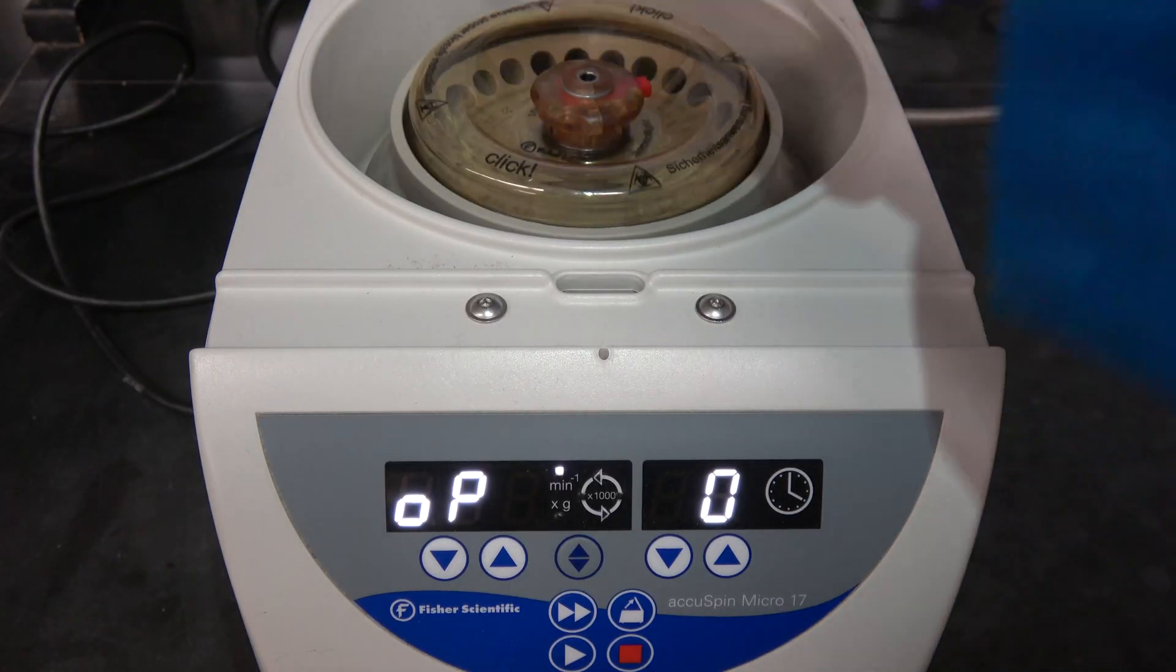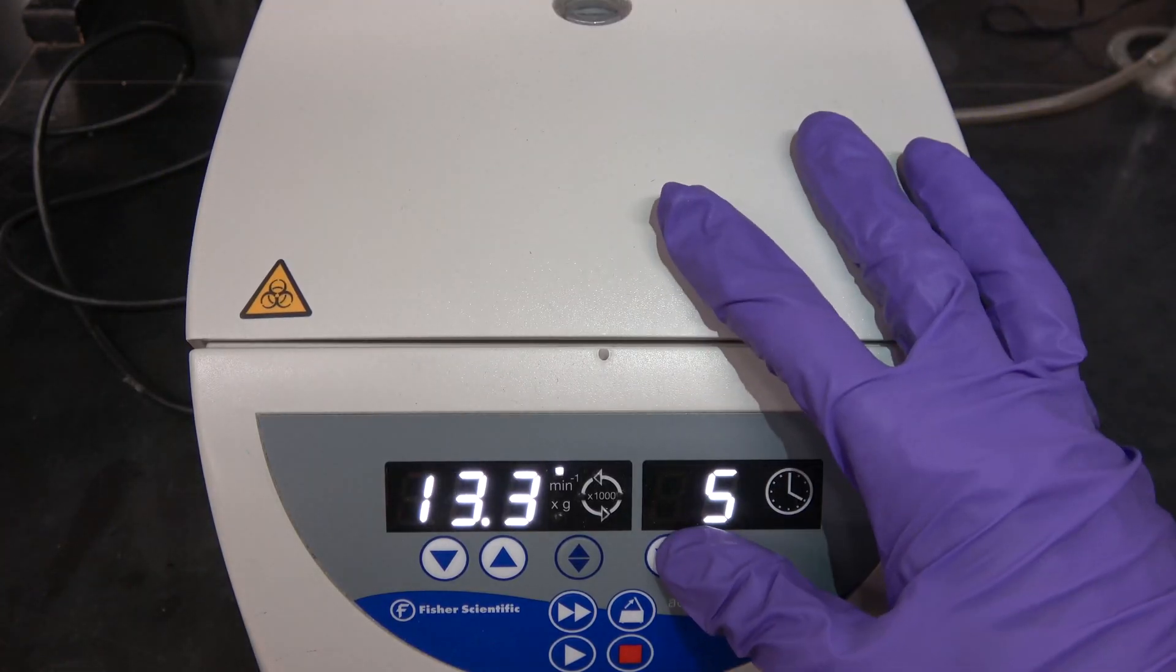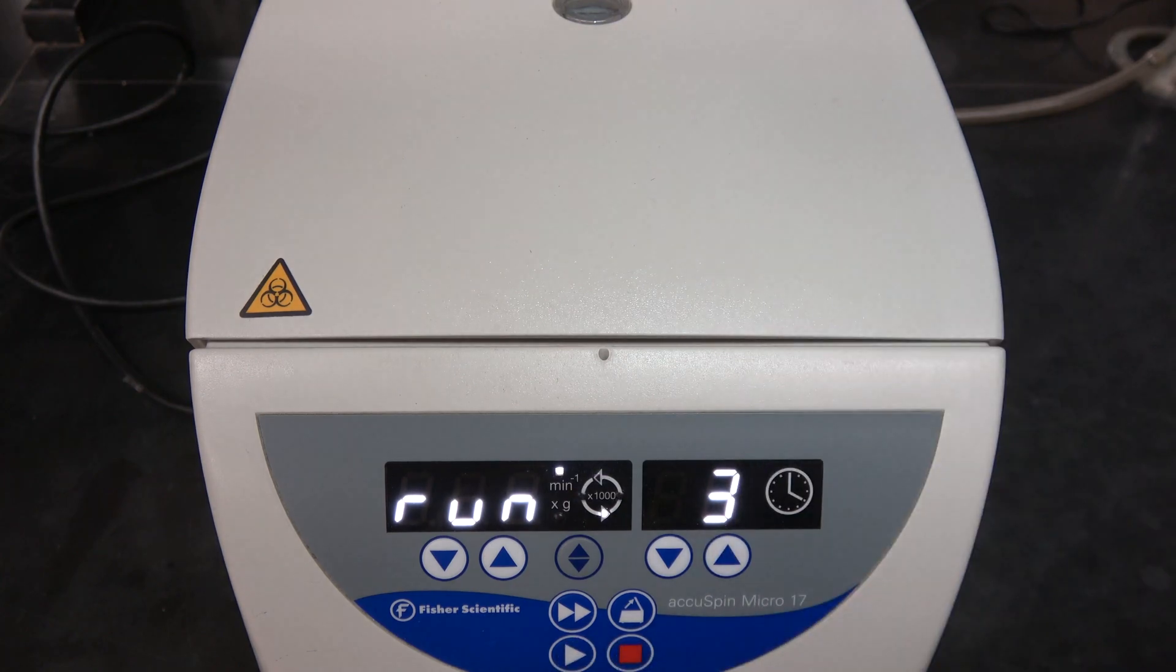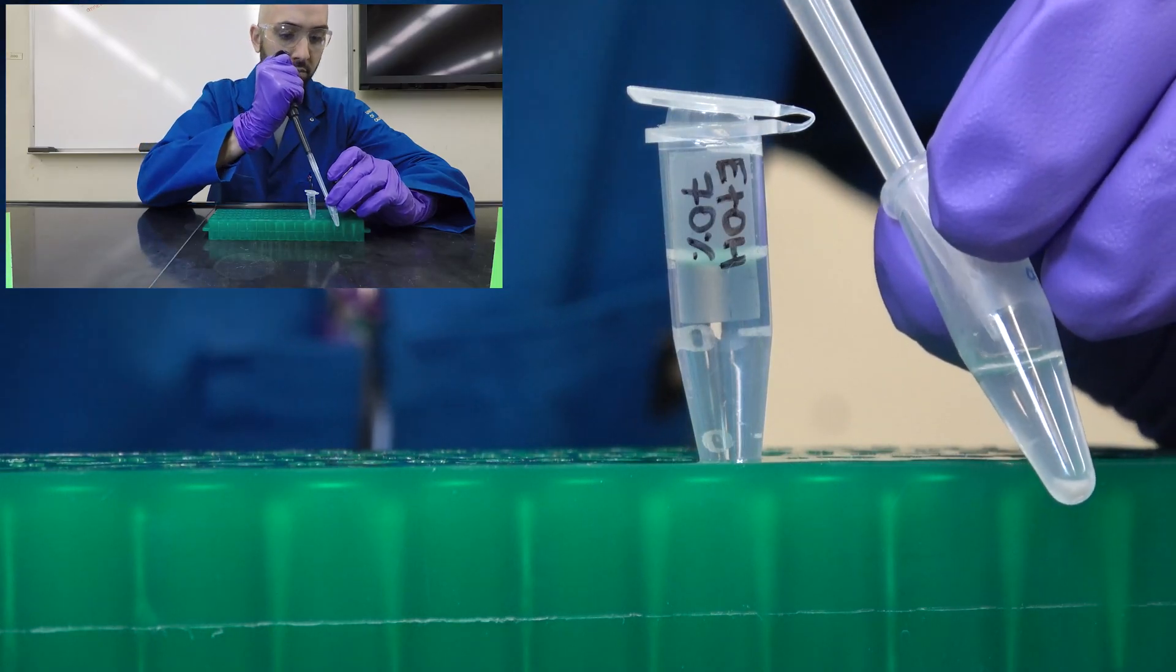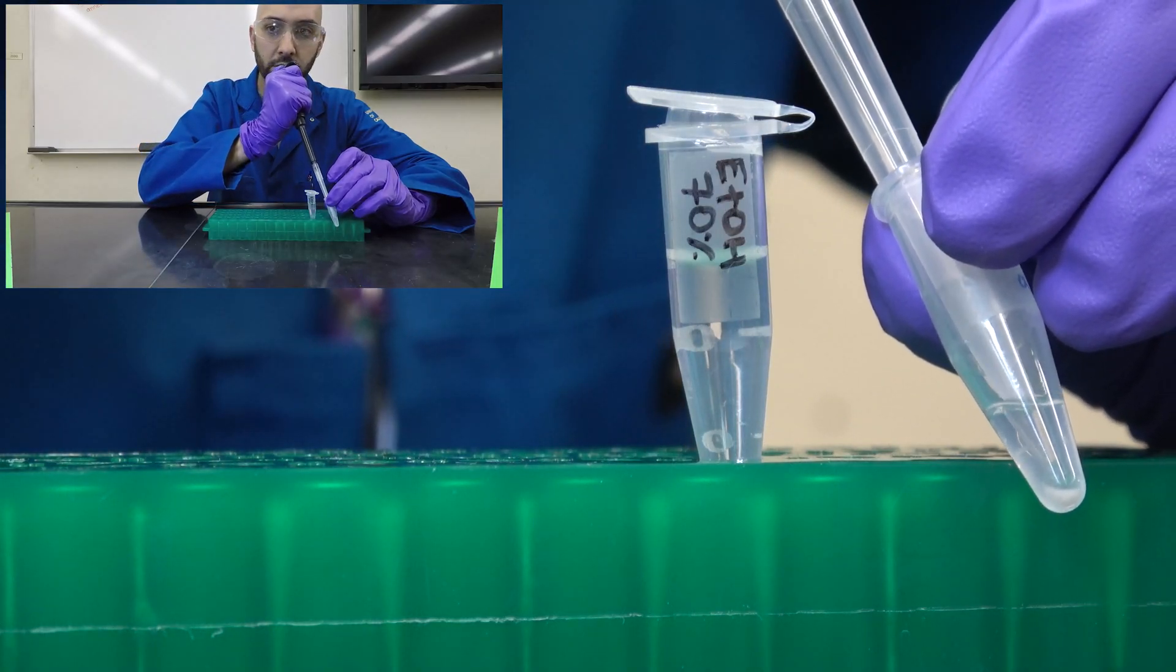We'll vortex to mix and centrifuge for 3 minutes at max speed. Next, aspirate the supernatant. The pellet is clearly seen at the bottom.